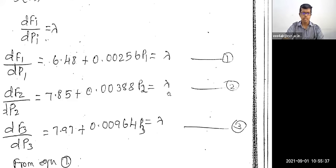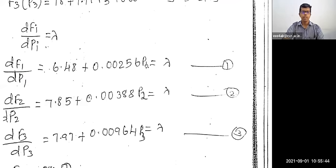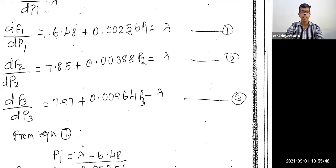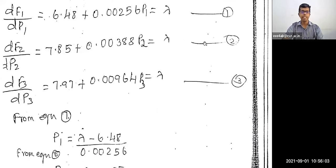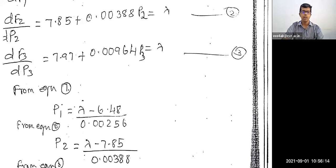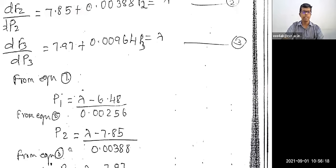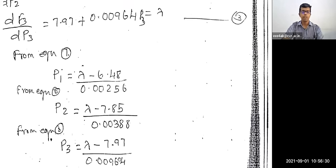Now we have three equations. From equation 1, we find P1 = (λ − 6.48) / 0.00256. From equation 2, P2 = (λ − 7.85) / 0.00388. From equation 3, P3 = (λ − 7.97) / 0.00964.